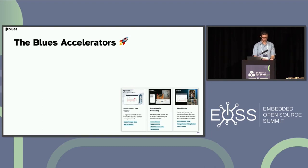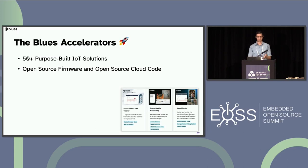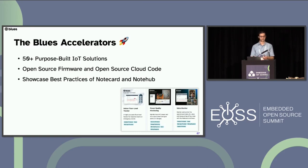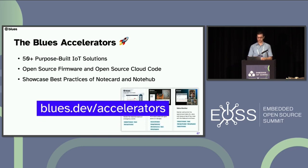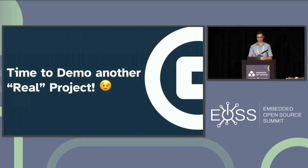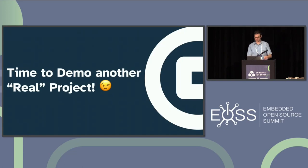One of these demos is available now and the other is coming soon to our Blues Accelerators — 50 purpose-built IoT solutions that are all open source, some with a comprehensive cloud component built in. All of them showcase best practices when using the Notecard and NoteHub. You can find them at blues.dev/accelerators. Now I want to show another real project — and remember, I'm definitely contributing to the IoT perception problem with this demo.